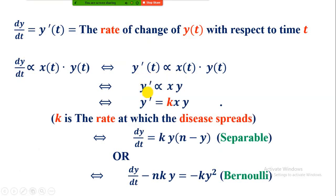So we can write for simplicity y prime is directly proportional to x and y. We can write y prime is equal to k x y where k is constant of proportionality and this is the rate at which the disease spreads.